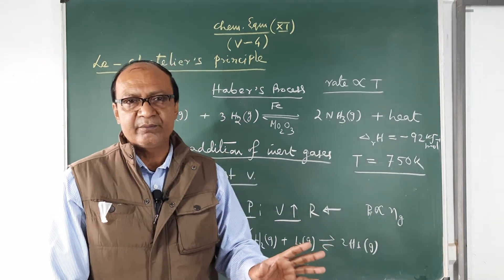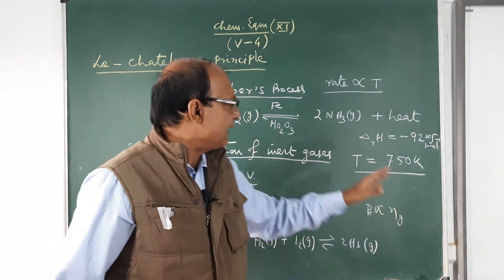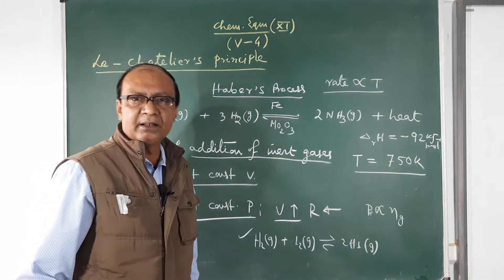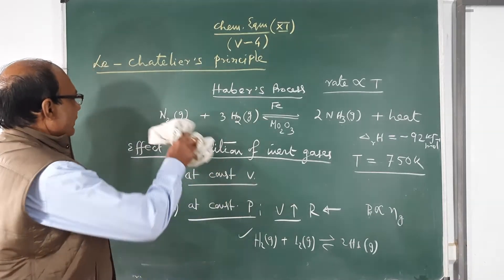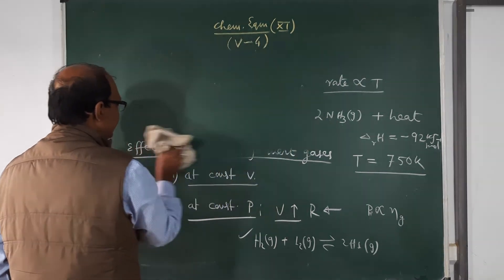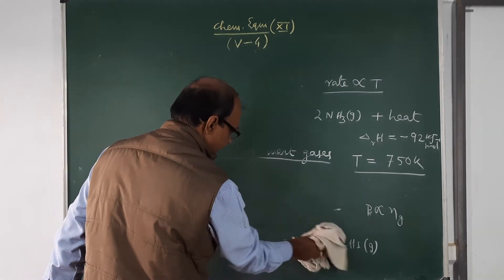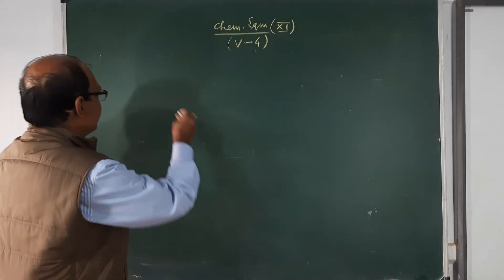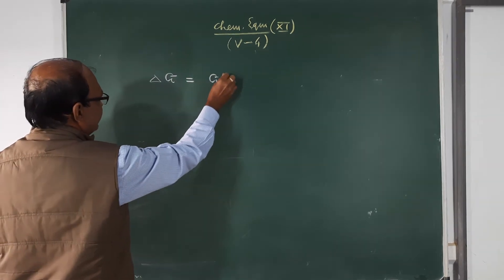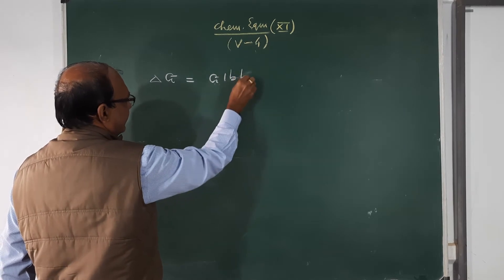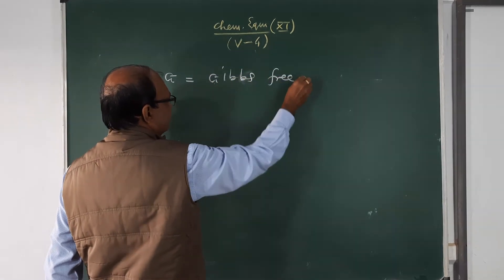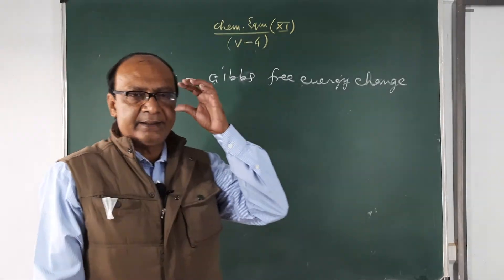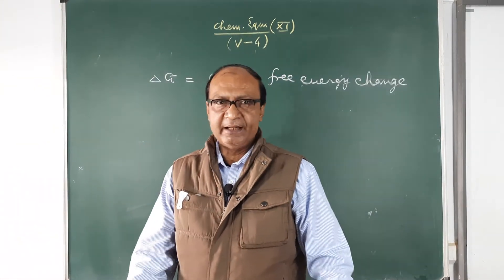This is Le Chatelier's Principle, and its applications can be seen from your textbook. Now we move to one more concept you may have already learned in thermodynamics: delta G, the Gibbs free energy change. Gibbs free energy is the energy that can be derived from a system for doing useful work — the whole energy of a system cannot be converted to useful work.